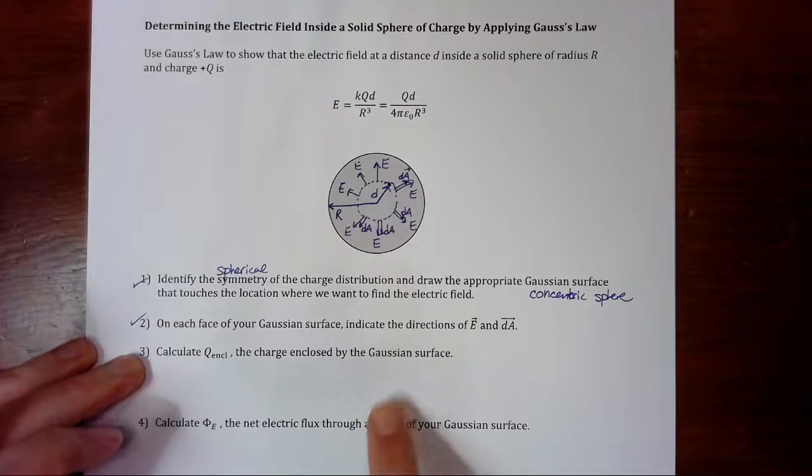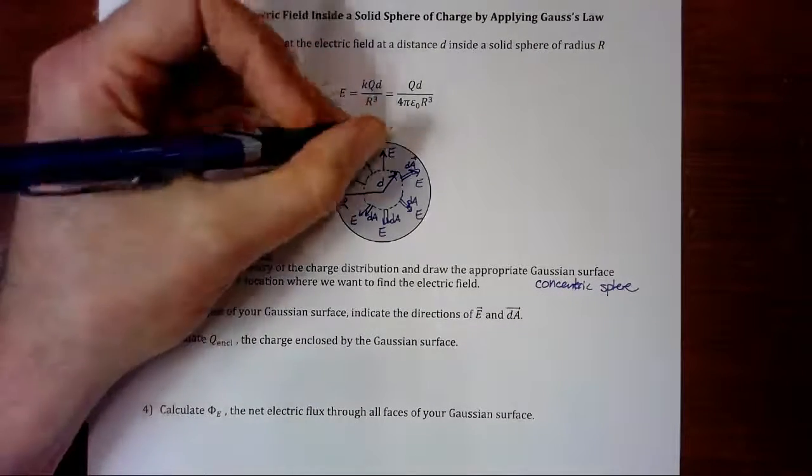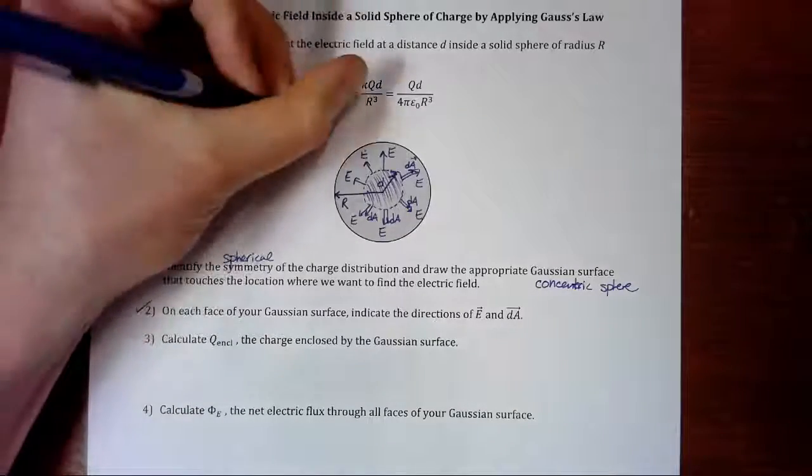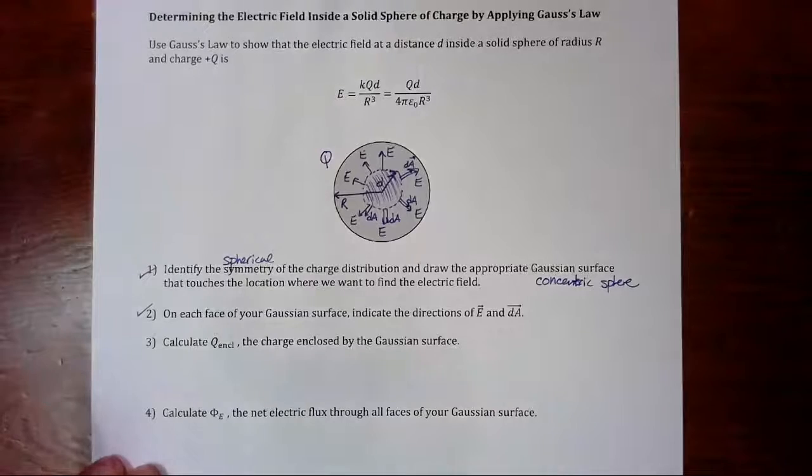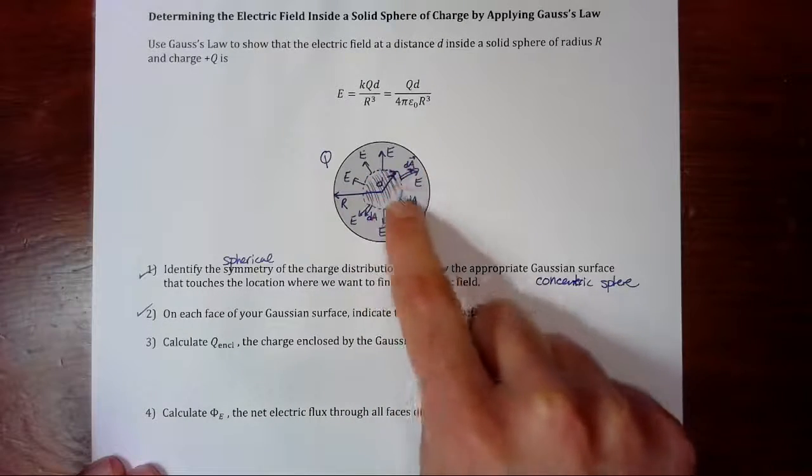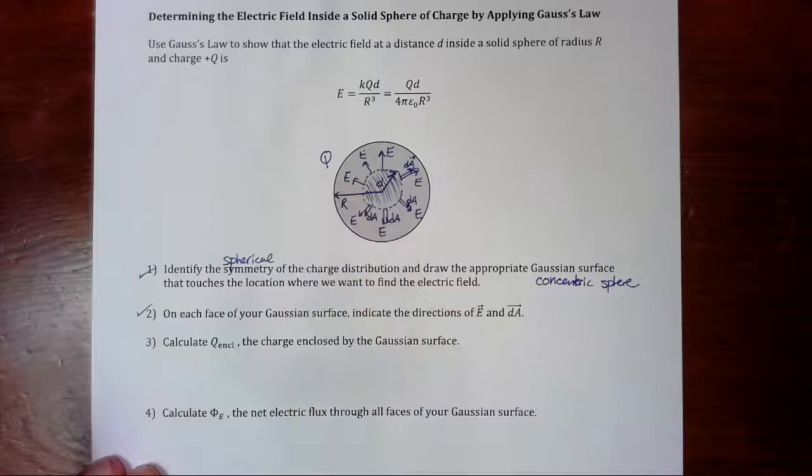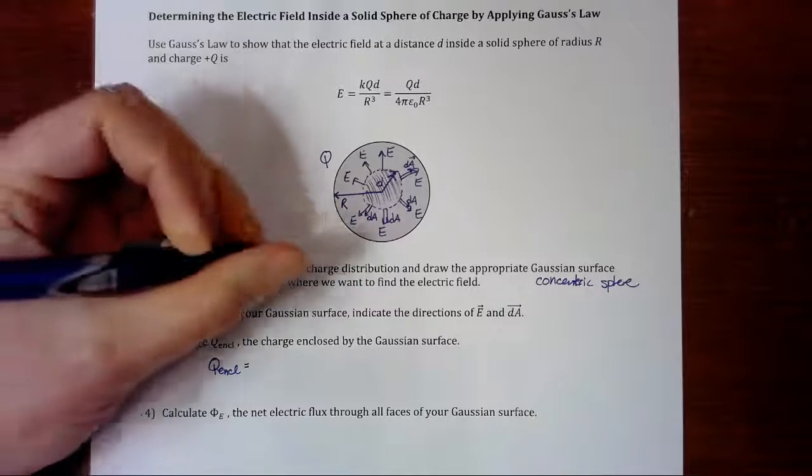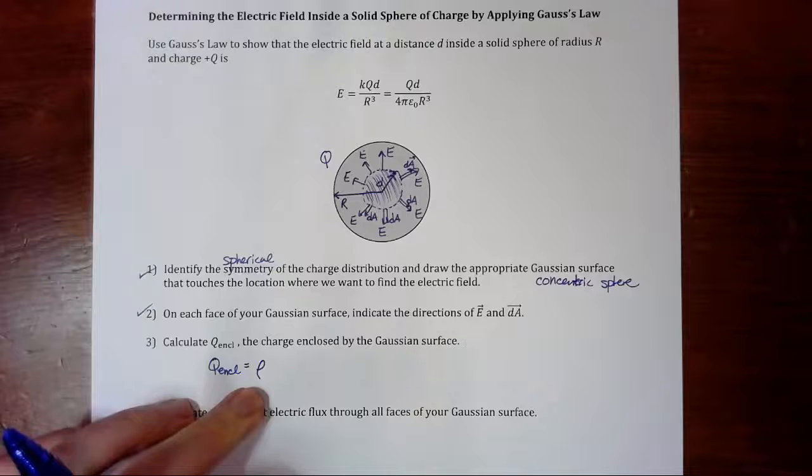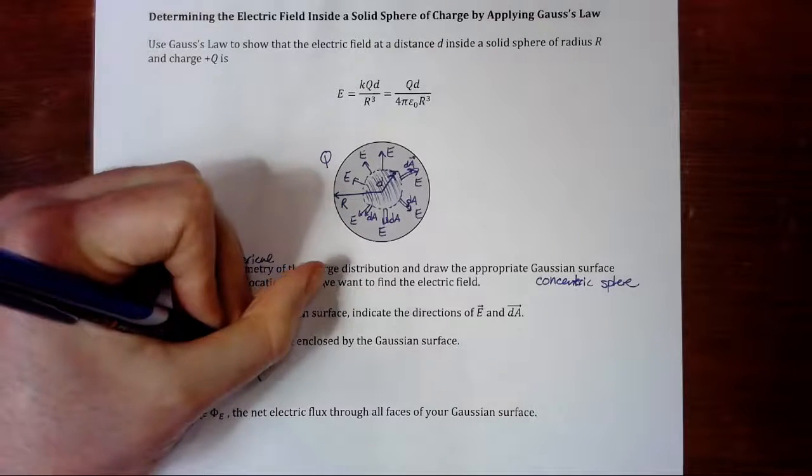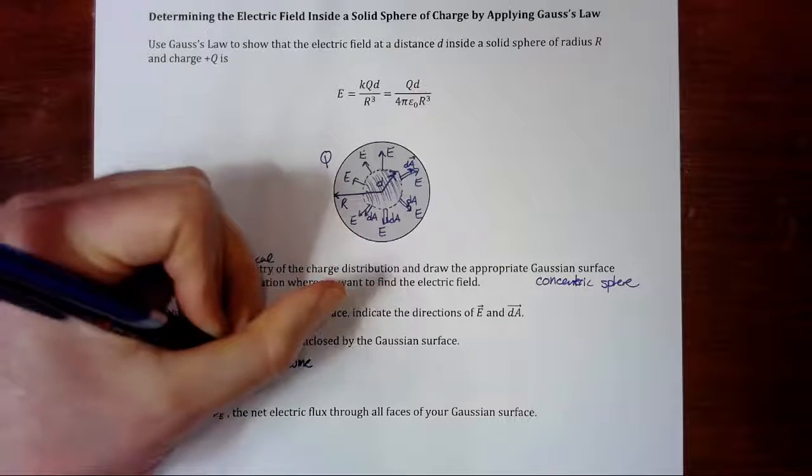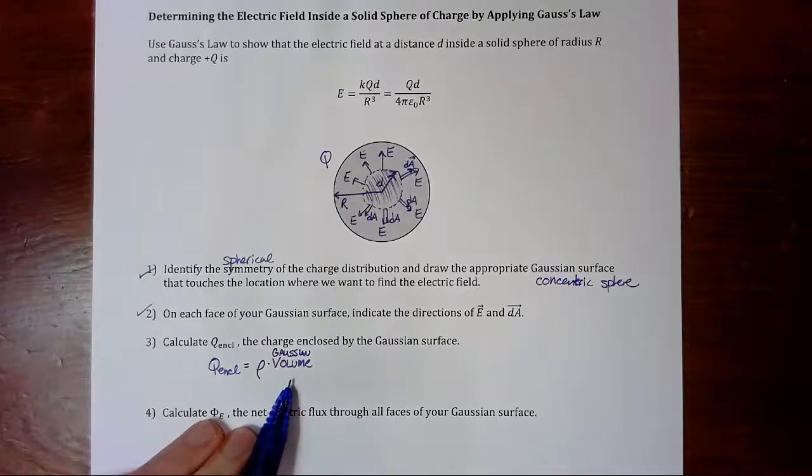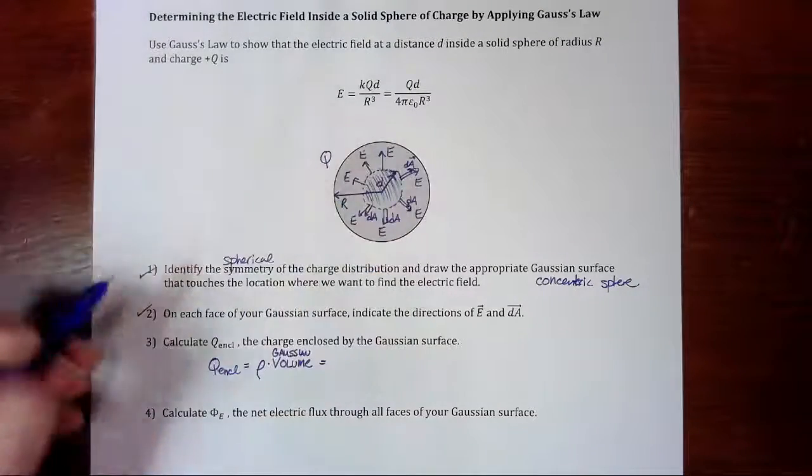Calculate Q enclosed, the charge enclosed by the Gaussian surface. So we need to figure out how much charge is in just this little bit. We know the charge on the whole sphere is big Q, but we just want to know the charge that's enclosed by our Gaussian sphere, which is a smaller bit of that charge Q. So Q enclosed is going to be the charge density times the volume of our Gaussian surface, our Gaussian sphere.